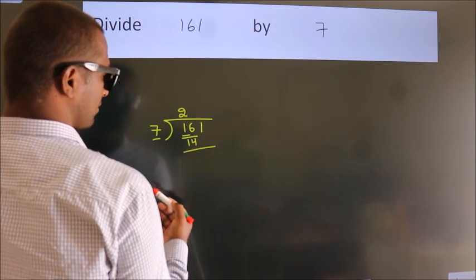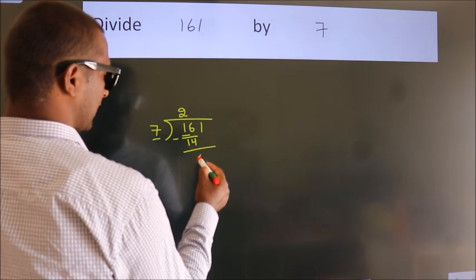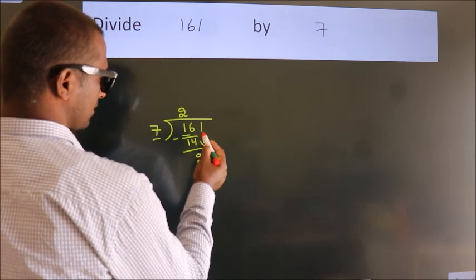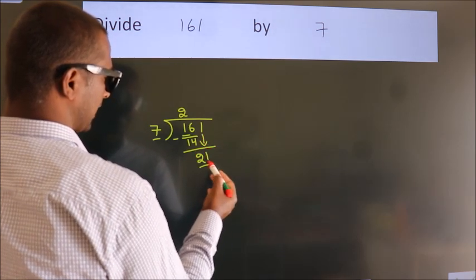Now we should subtract. We get 2. After this, bring down the next number. So 1 down. So 21.